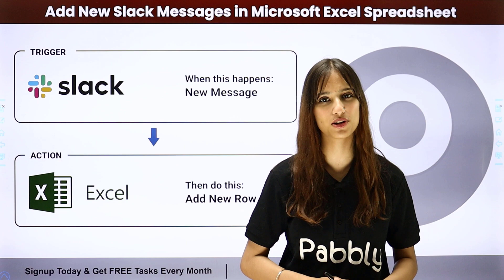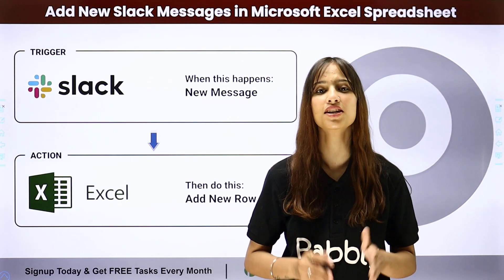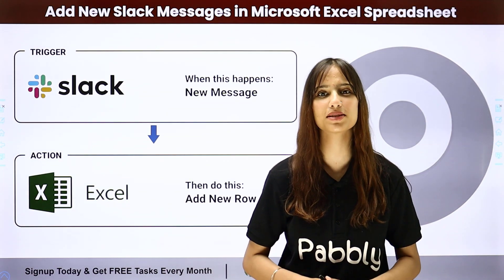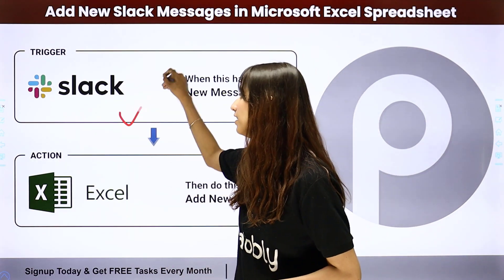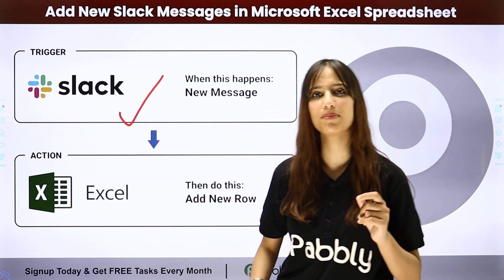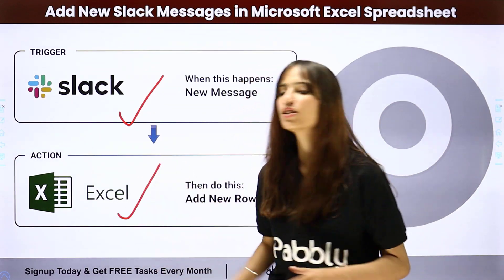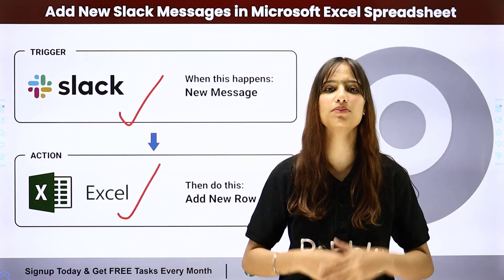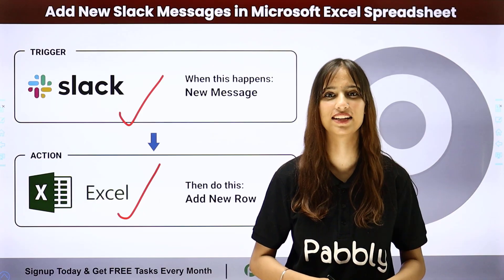Pabbly Connect follows the concept of trigger and action. My trigger application will be Slack and my action application will be Microsoft Excel. If you want to learn more about this, follow me through the screen.